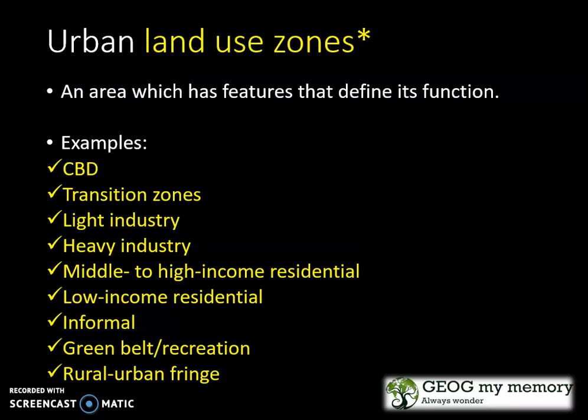Now let's move on to your urban land use zones. These are basically areas which have features that define their function. The CBD is in the city center and has the highest land values. Your transition zone is a zone of mixed and changing land use and is often a zone of decay. Your light industry is often near the CBD or in planned industrial estates. Your heavy industry is found on the outskirts of the city where land is cheapest. You have your middle to high income residential, found away from the CBD and often with a good view. Your low income residential is where buildings are very close together but close to the business area. Your informal settlements are found on the city outskirts and often have no service delivery.